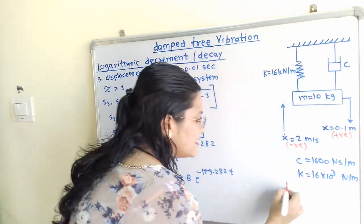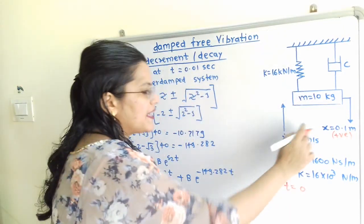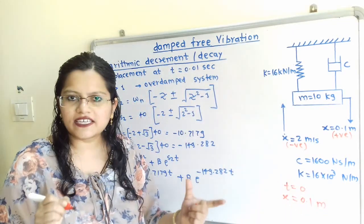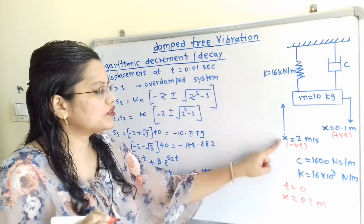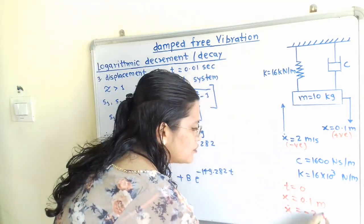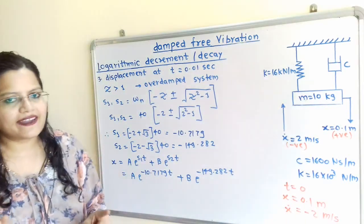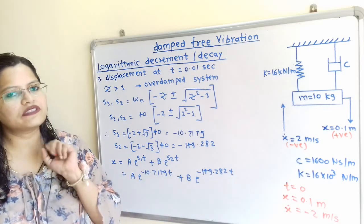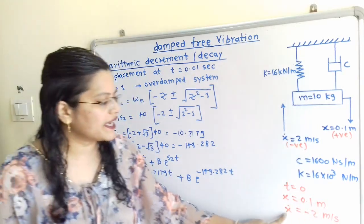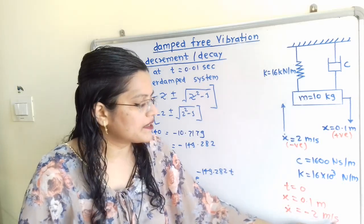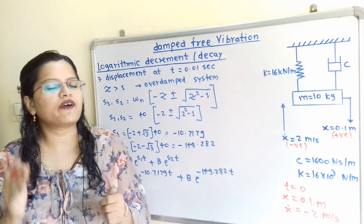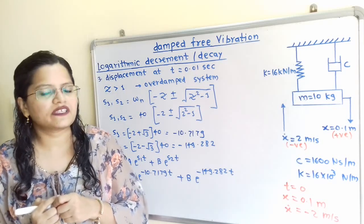We can say that at time t equal to 0, displacement x equals 0.1 meter. And when the mass is released, at time t equal to 0 the velocity x-dot equals −2 m per second, since it is in the opposite direction of displacement. To find the unknown values A and B, we use these initial conditions: at t=0, x = 0.1 m and x-dot = −2 m/s. These displacement and velocity values are functions of time t.